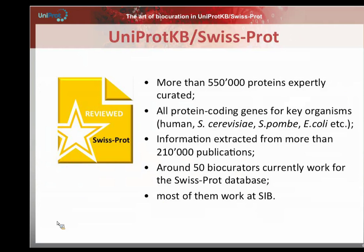SwissProt contains more than 550,000 proteins that have been expertly curated. It contains all protein-coding genes for a number of key organisms, like human, Saccharomyces cerevisiae, S. pombe, E. coli, or Bacillus subtilis. It contains information extracted from more than 2,100 publications indexed in PubMed, and around 50 biocurators currently work for SwissProt. Most of them work at the SIB SwissProt group in Geneva, which probably constitutes the largest group of biocurators worldwide.